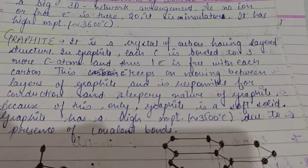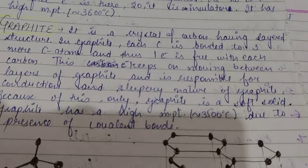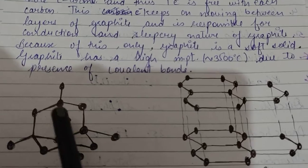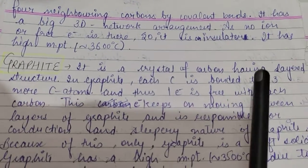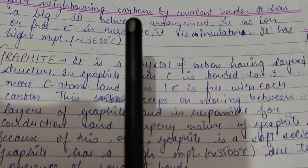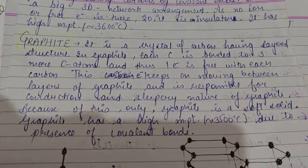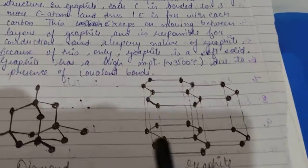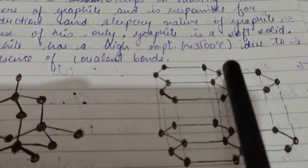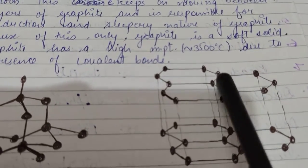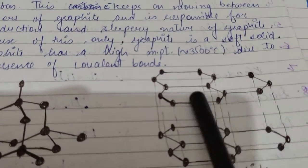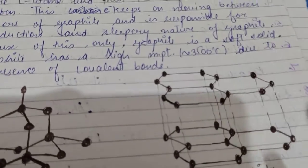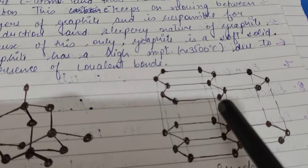Diamond is an insulator — it doesn't have any free electron to conduct electricity because all four valence electrons of carbon are used in forming bonds. It also has a very high melting point of about 3600°C. Graphite, another allotrope of carbon, is a crystal with a layered structure. In graphite, each carbon forms only three bonds, making a planar sheet structure. These sheets overlap on one another, giving graphite its layered arrangement.